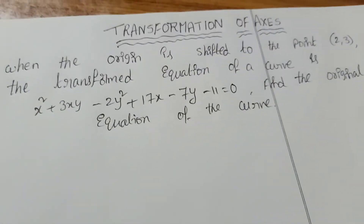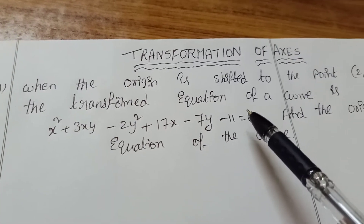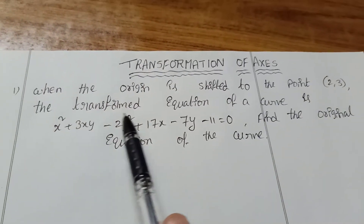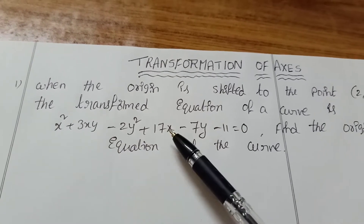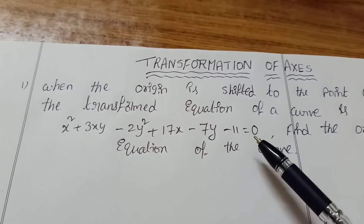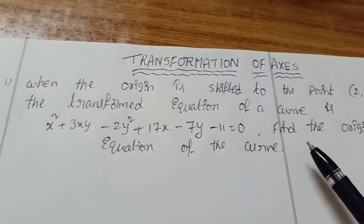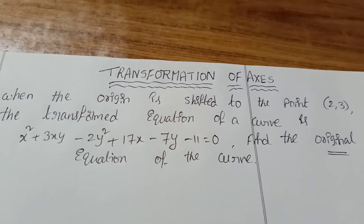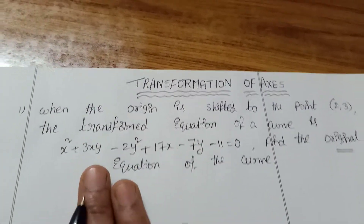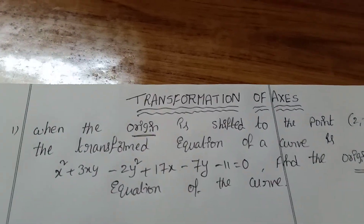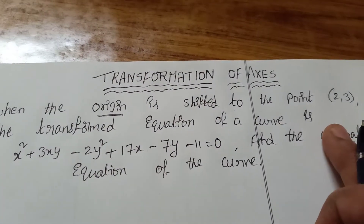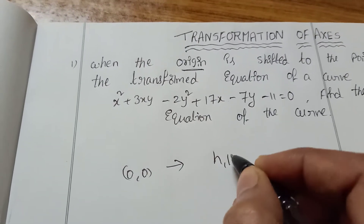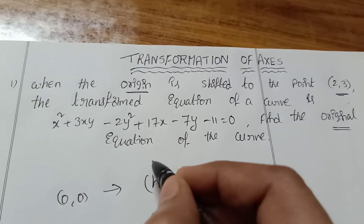Question one — four marks. This chapter carries one four-mark question in IP exams. When the origin is shifted to the point 2 comma 3, the transformed equation of a curve is X square plus 3XY minus 2Y square plus 17X minus 7Y minus 11 equal to 0. Find the original equation of the curve.